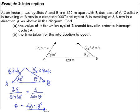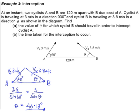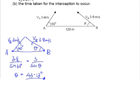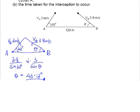Any problem with that? I certainly hope not, because this is based on something we have already learned before — it shouldn't be that difficult. Now, as for part B, we have to find the time taken for the interception to occur. As per what we have learned, to find time is simply the distance divided by the speed.